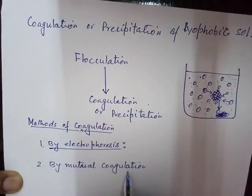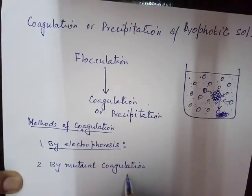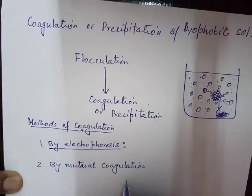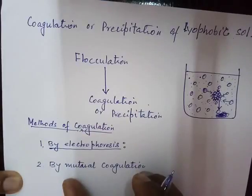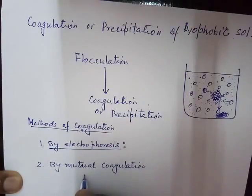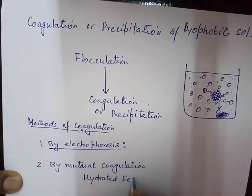By the method of mutual coagulation: in this method we add two oppositely charged colloidal sols. When mixed together, they will neutralize each other. Suppose one is a positively charged colloidal solution and another is a negatively charged colloidal solution — when they are mixed in one container, they neutralize the charge present on each other. This is known as mutual coagulation.